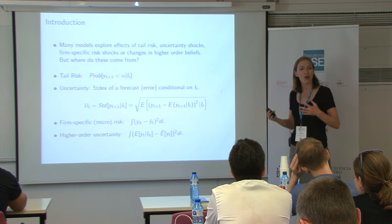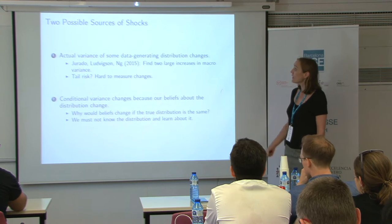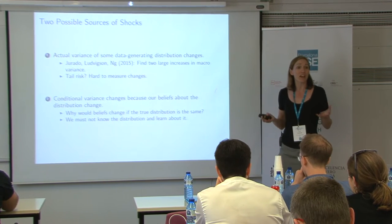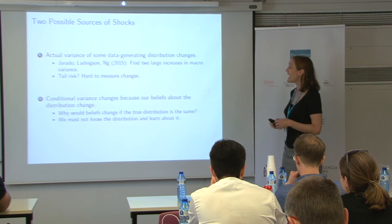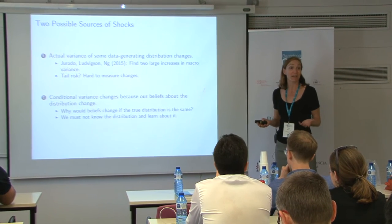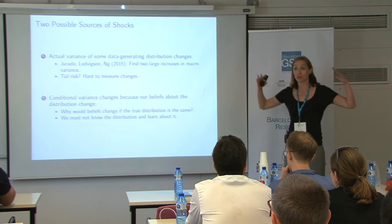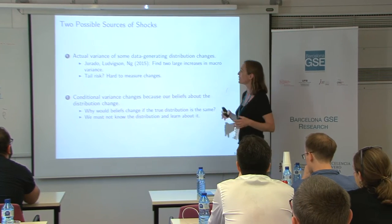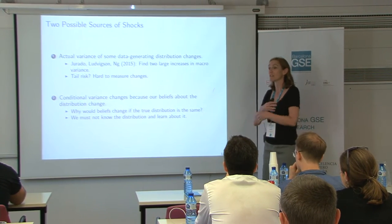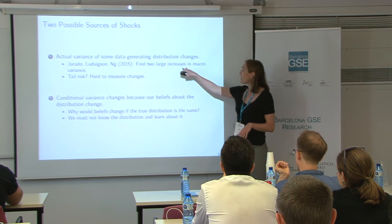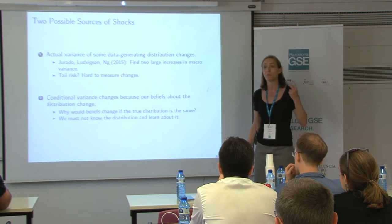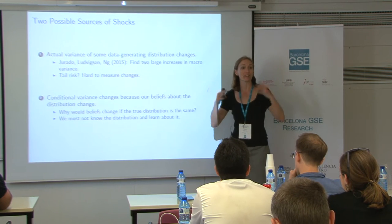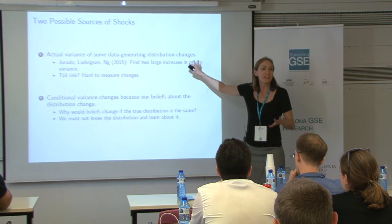Times of low uncertainty, they co-move, but it's a little puzzling why. For all of these, there are two possible sources of shocks. These are all talking about some conditional variance or tail probability. It could be that the actual variance of the data generating process changes — we could just see actual changes in the distributions of shocks we face. That's what Geraldo Ludvigsen, Eng, and others are looking at — estimating stochastic volatility models on macro data, finding about two large increases in macro variance.